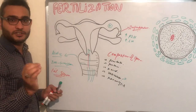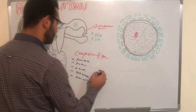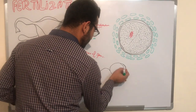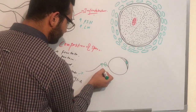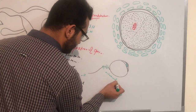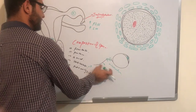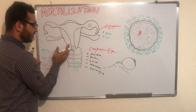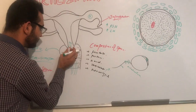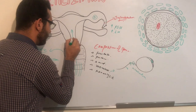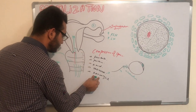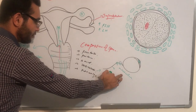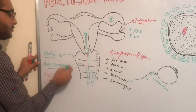To understand how sperm reaches the fallopian tube, we need to know the structure of the sperm. The head contains the acrosome; the mid-piece contains mitochondria which provide ATP energy; and the tail is made up of a flagellar-like structure. The mitochondria provide ATP, and fructose provides nutrition, allowing the sperm to move upward.